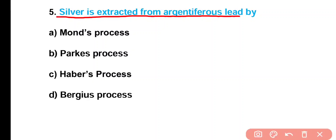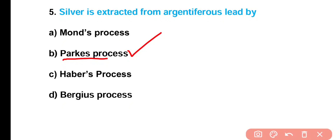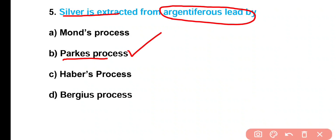Question number 5: Silver is extracted from argentiferous lead by — Mond process, Parkes process, Haber's process, or Bayer's process? Correct answer is option B. Parkes process — silver is extracted from argentiferous lead by using zinc.